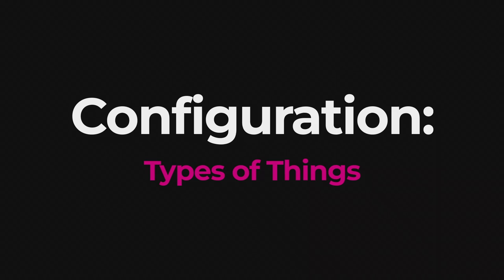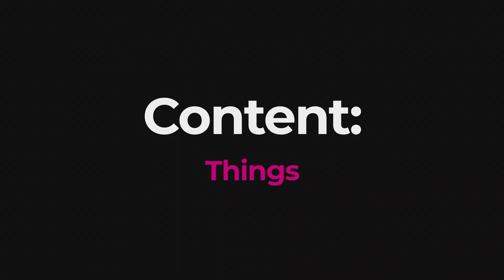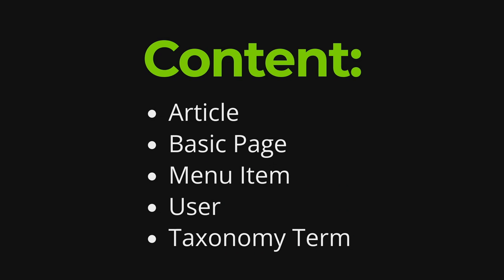I think of configuration as types of things. Configuration includes things like views, content types, image styles — those are the types of things. On the other hand, we have content — the things. The things are things like articles, basic pages, and taxonomy terms, and those all go under the content bucket. This might be very basic for some of you, but I just want to be clear that we do kind of divide things in Drupal like that.